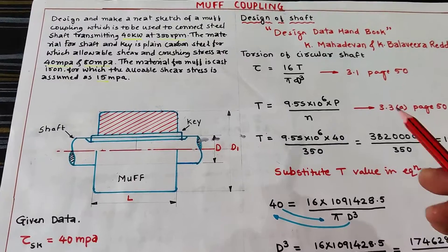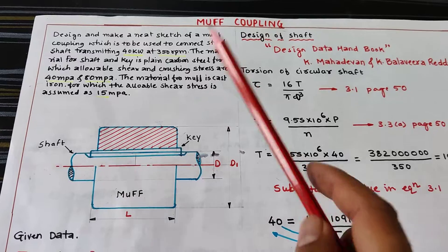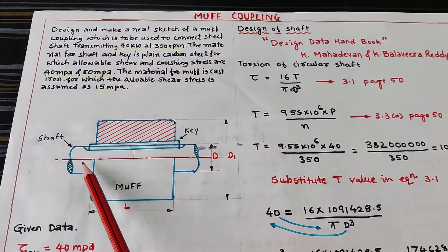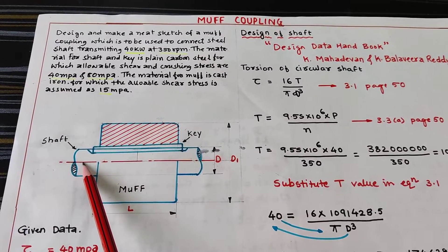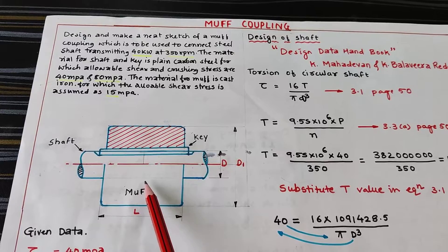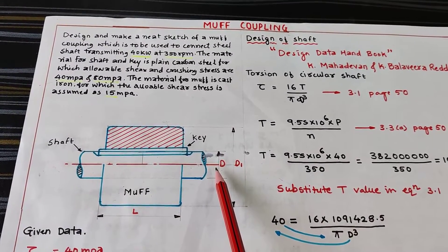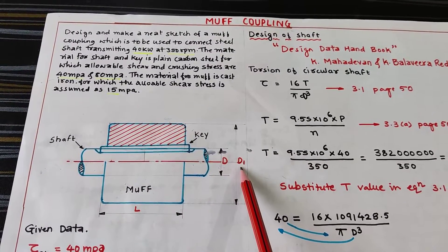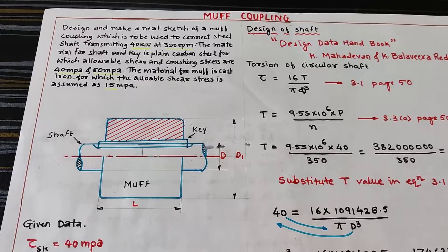Hello my dear students, today we are going to cover a problem on MUF coupling. MUF coupling is a mechanical device which connects two shafts which are parallel to each other. In this figure there are two shafts; there is one key and the outer portion is called the MUF. The shaft diameter is denoted by capital D, the MUF outer diameter is denoted by D1, and the length from edge to edge is denoted by L.